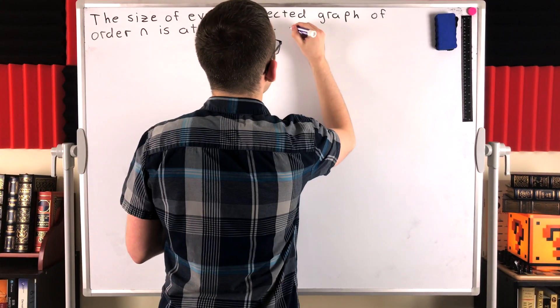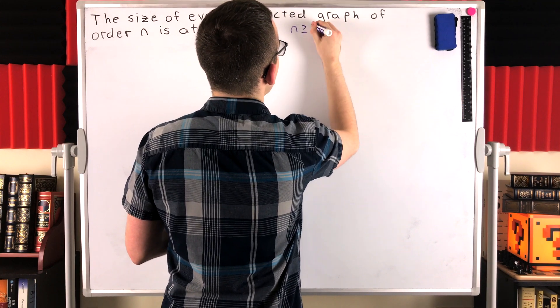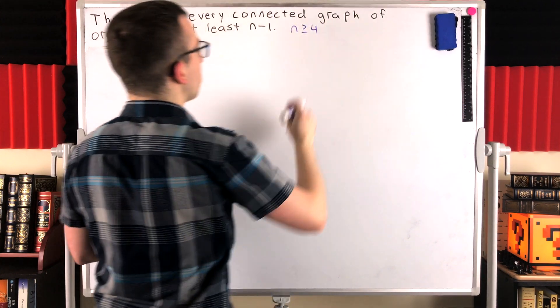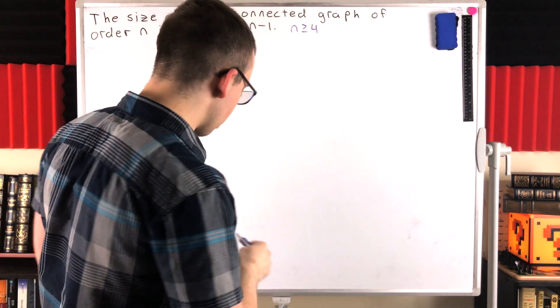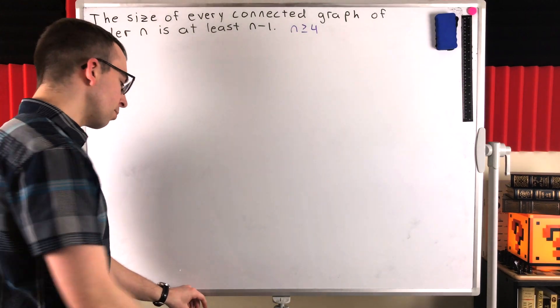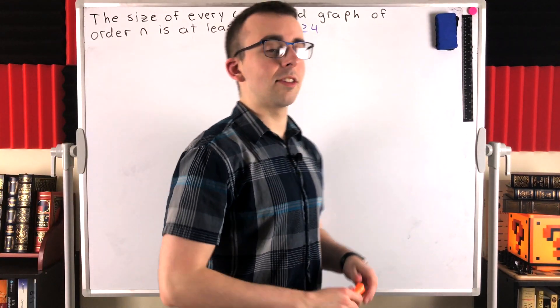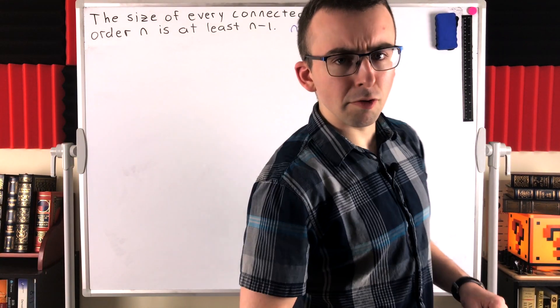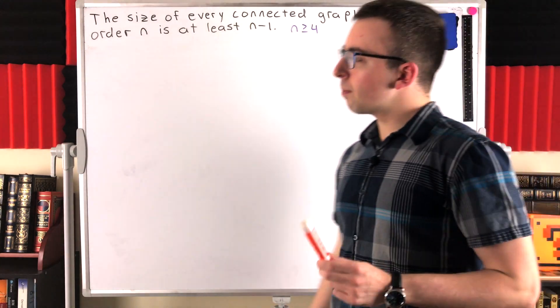So going forward, we can assume that n is greater than or equal to 4. That's all we have left to prove. This is going to be a proof by minimum counterexample, which is a type of proof by contradiction.